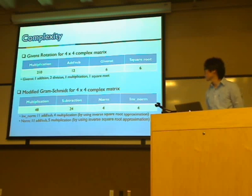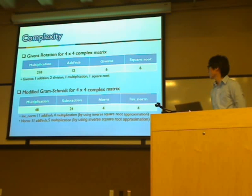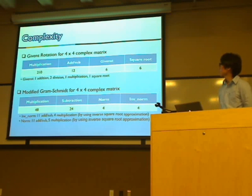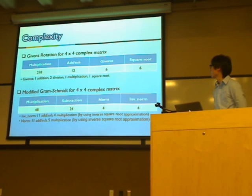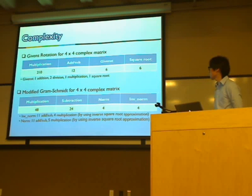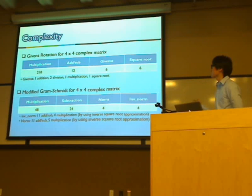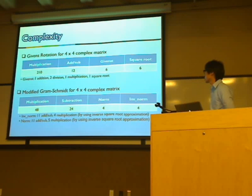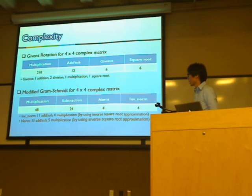Hi, my name is Jinsuga. I'm going to present the rest of the presentation. First, let's look at complexity for Givens Rotation versus modified Gram-Schmidt, evaluated using a 4×4 complex input matrix. For Givens Rotation, it requires 210 multiplications and 6 rotation operations, each consisting of 1 addition, 2 divisions, 1 multiplication, and 1 square root. For modified Gram-Schmidt, it requires only 48 multiplications but includes norm and inverse norm operations.